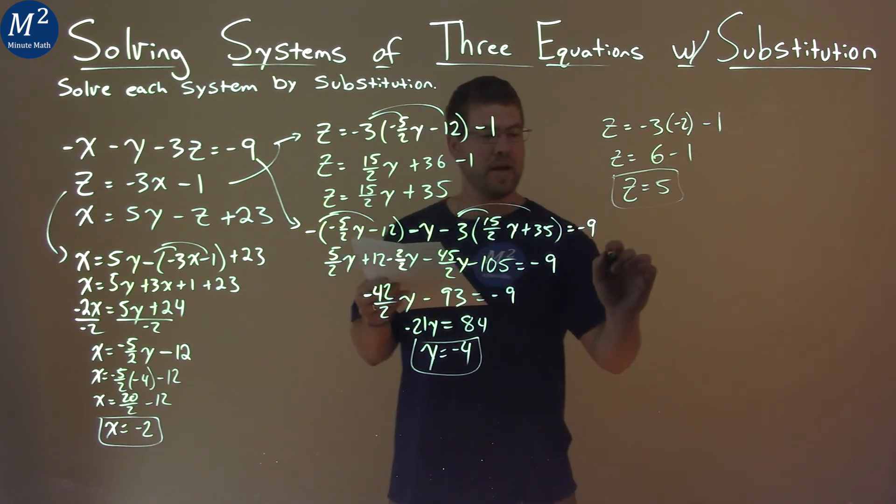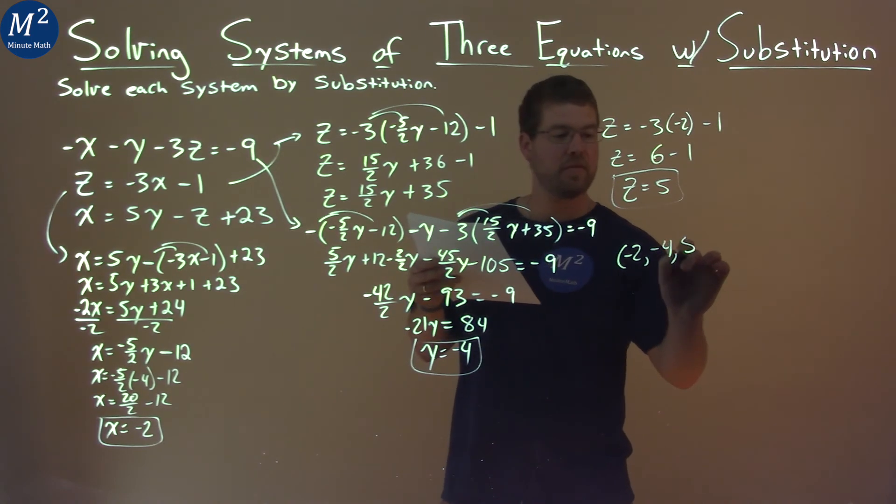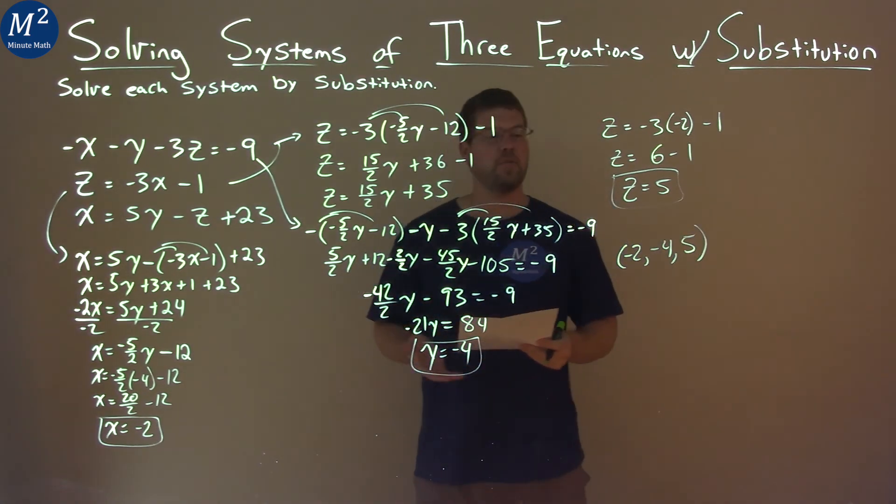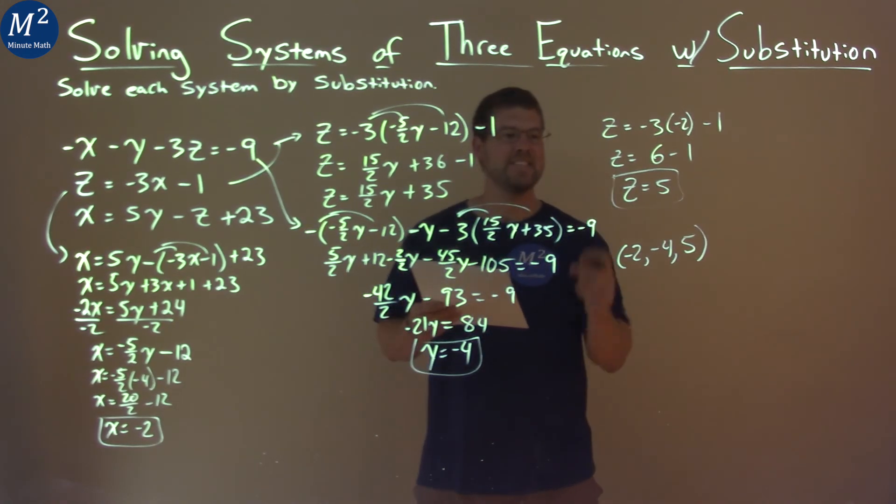And so we have our three answers we can put as a coordinate point: negative 2, negative 4, and positive 5. And that's our final answer. x equals negative 2, y equals negative 4, and z equals 5.